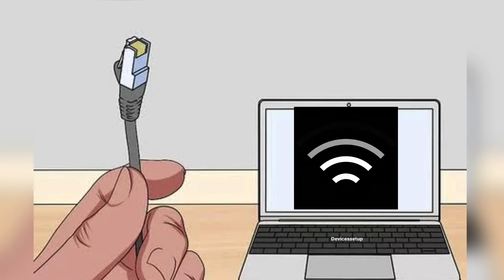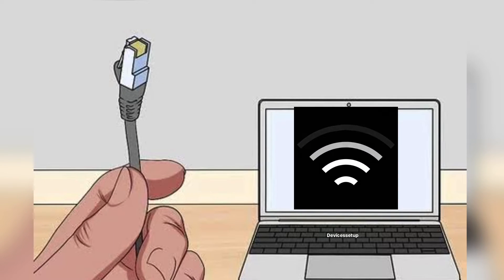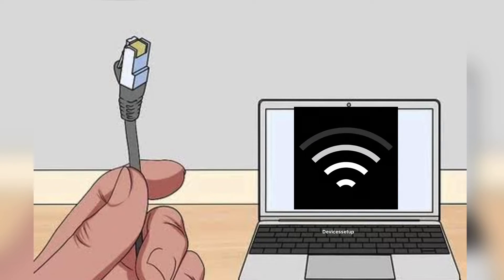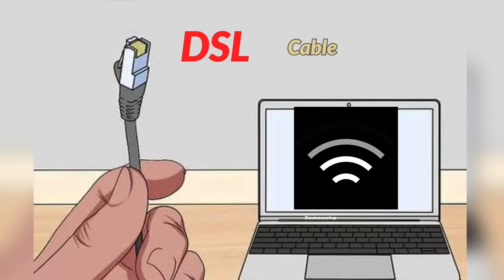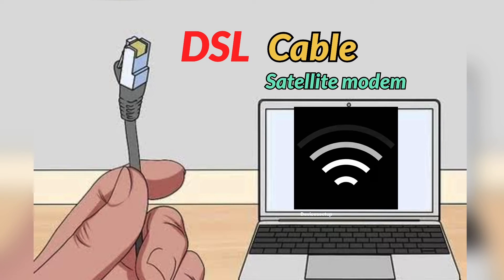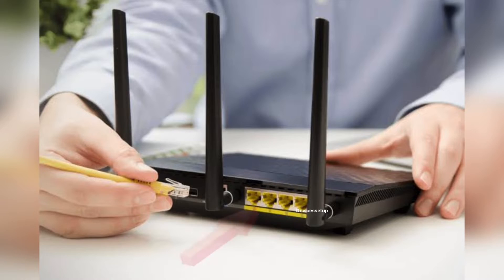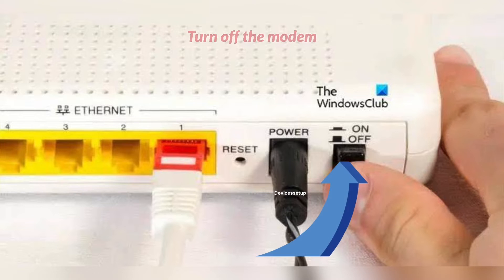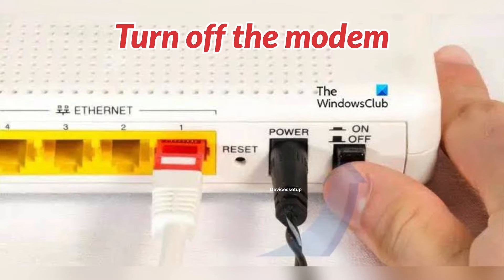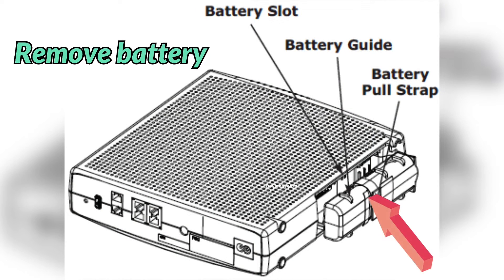If your internet connection is through an ethernet cable directly from the wall instead of a DSL, cable, or satellite modem, then connect the ethernet cable to the router's WAN port. Otherwise, if you have a modem, turn off the modem and remove the battery if it has one.